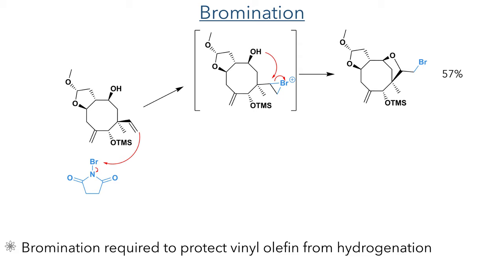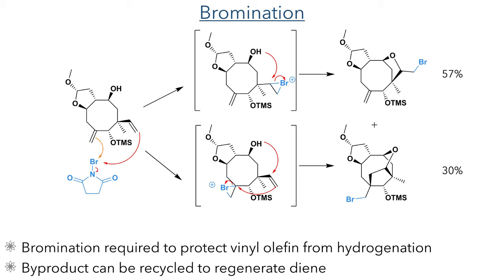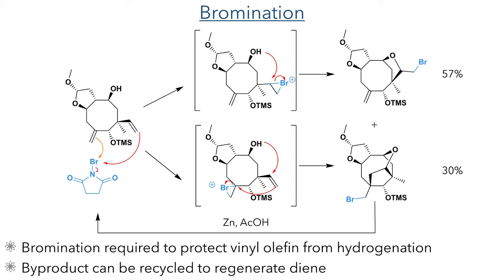In addition to this product, they also observed bromination of the olefin appended to the eight-membered ring. This bromonium intermediate was attacked by the vinyl alkene, which was in turn attacked by the hydroxyl group, producing a tetracyclic product in a 30% yield. This unwanted by-product could be reduced using zinc dust and acetic acid to reform the starting material, and thus the reaction could be repeated to obtain more of the intended product.